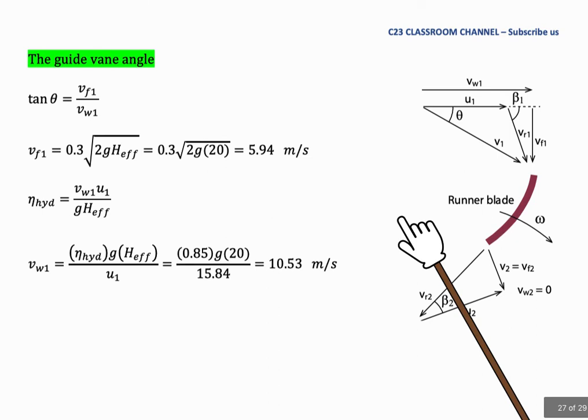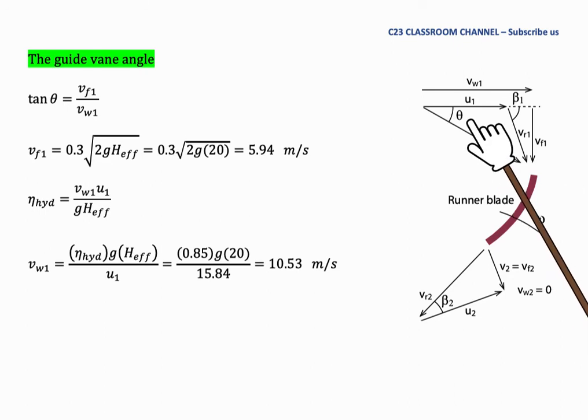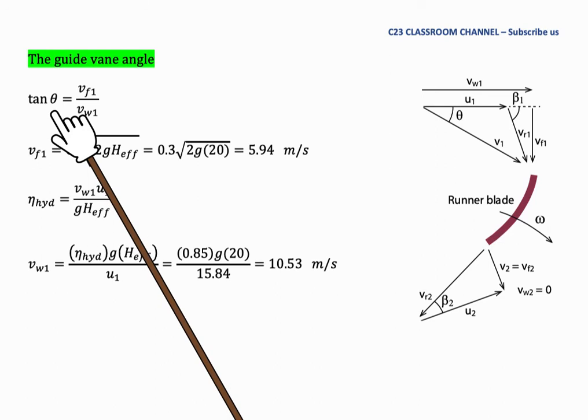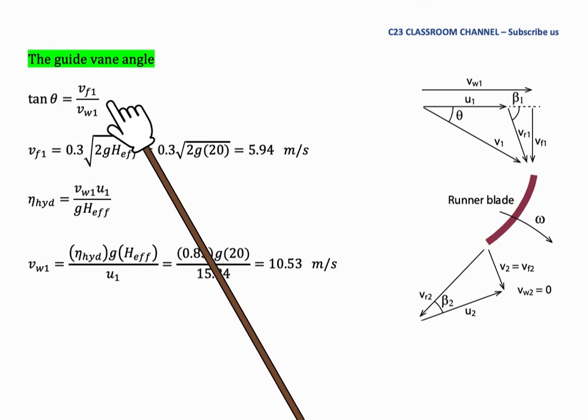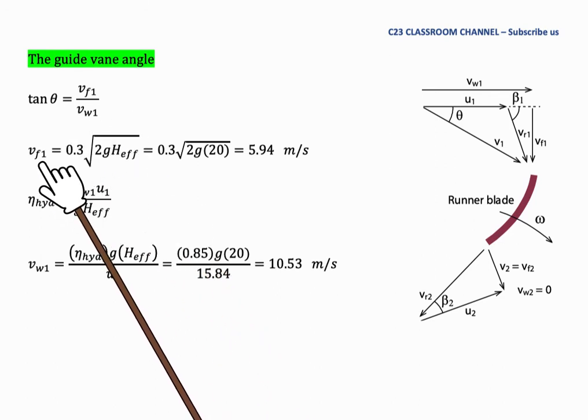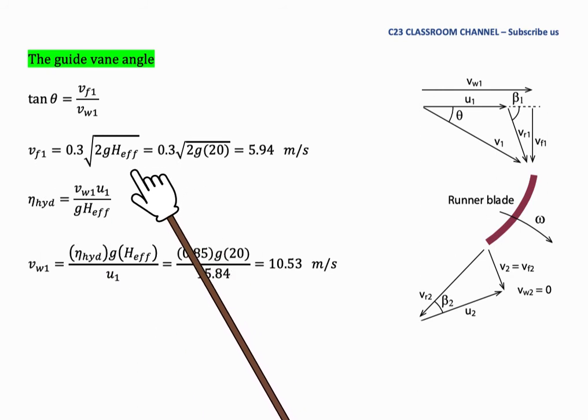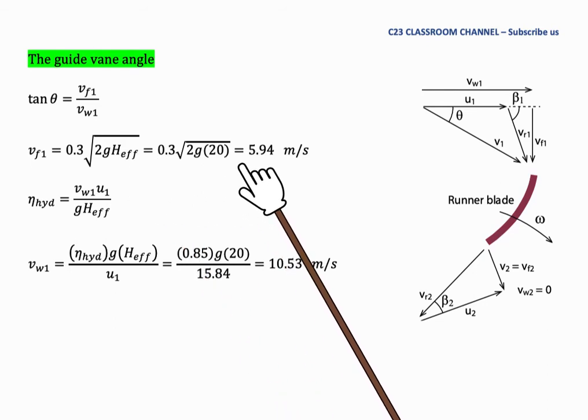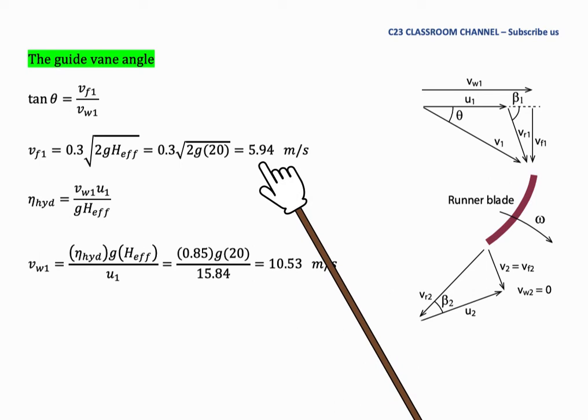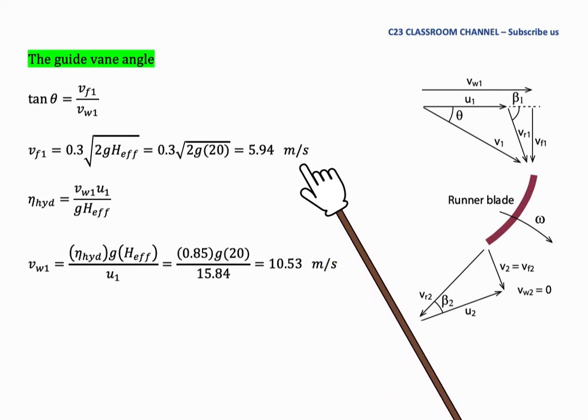Next, we are calculating the guide vane angle. This is the velocity triangle and the guide vane angle is this theta. From the velocity triangle here, we could write tangent theta is equal to VF1 over Vw1. VF1 can be calculated using this equation. We substitute the value of H here with H effective which is 20 meters and we get VF1 is equal to 5.94 meters per second.